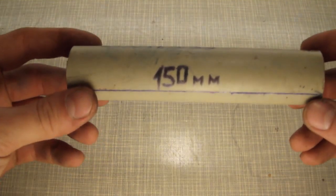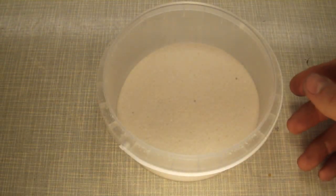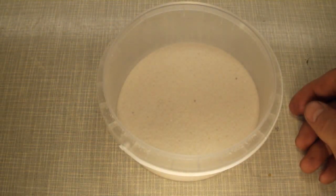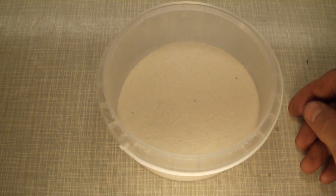So, to make this rocket we'll need a thick-walled PVC pipe 150mm long, a mixture of potassium nitrate and powdered sugar in a ratio of 65% potassium nitrate and 35% powdered sugar. Grind this entire mixture thoroughly in a coffee grinder to form a uniform powder.